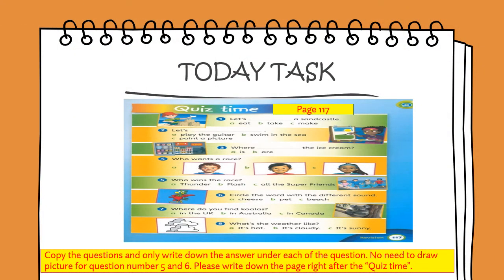Alright, this is your homework. You have to turn to page 117 and copy the questions, and only write down the answers under each of the questions. No need to draw a picture for questions number five and six. Please write down the page right after the quiz time. That's all for today's lesson. Remember to write the date and the day. See you then, bye!